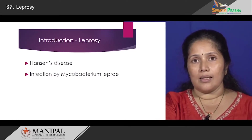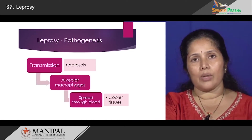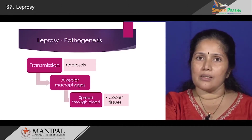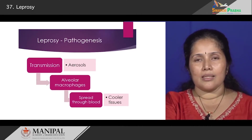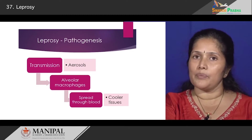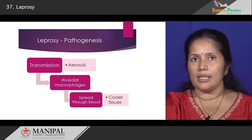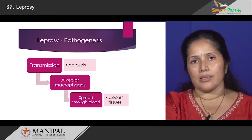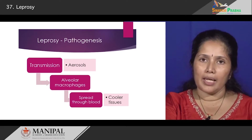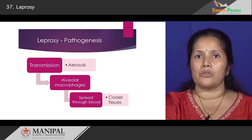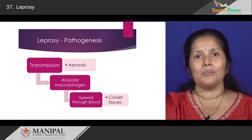How does this infection get into a person? Let us look at the pathogenesis. The way it is transmitted is via aerosols. We inhale the aerosols and from there it goes into the lung alveolar macrophages. From the lung alveolar macrophages, these bacilli proliferate and then travel through the bloodstream into different parts of the body.